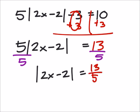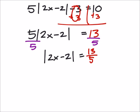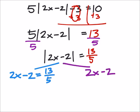Alright, once we get to this point with absolute value isolated, however you want to say it. Then we can split this thing up. So I've got 2x minus 2 equals 13 fifths. But also I would have 2x minus 2 equals a negative 13 fifths.